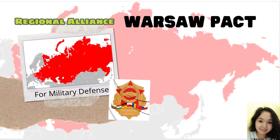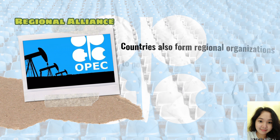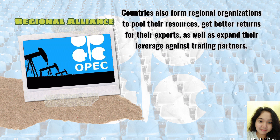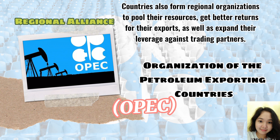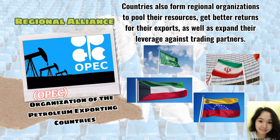Another alliance, the Warsaw Pact, was the Soviet Union's response — creating its own regional alliance consisting of Eastern European countries under Soviet domination. Countries also form regional organizations to pool their resources, get better returns for their exports, and expand their leverage against trading partners. For example, the Organization of the Petroleum Exporting Countries, or OPEC, was established in 1960 by Iran, Iraq, Kuwait, Saudi Arabia, and Venezuela to regulate the production and sale of oil. This regional alliance flexed its muscles in the 1970s when member countries took over domestic production and dictated crude oil prices in the world market. OPEC's success convinced nine other oil-producing countries to join them.